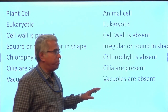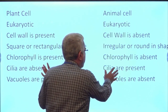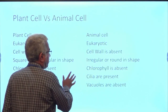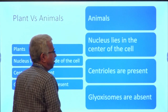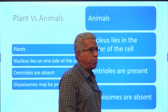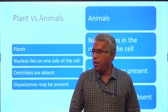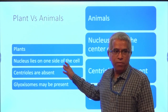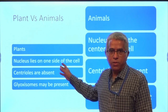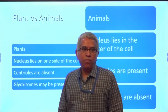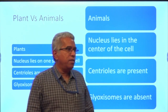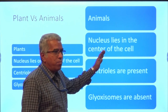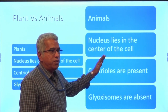Now let us add to the list of differences. In plants, the nucleus lies on one side of the cell, whereas in the case of animals the nucleus lies normally in the center of the cell.